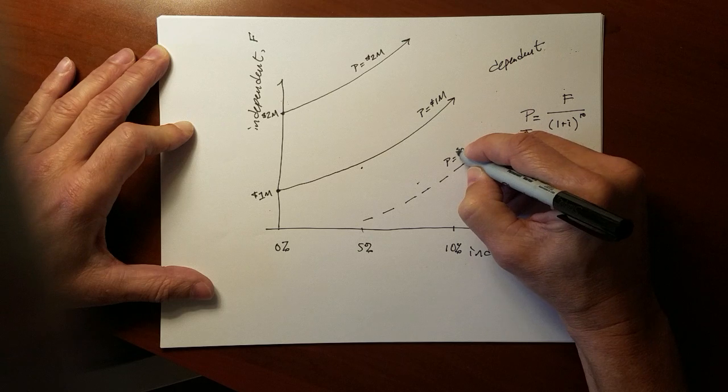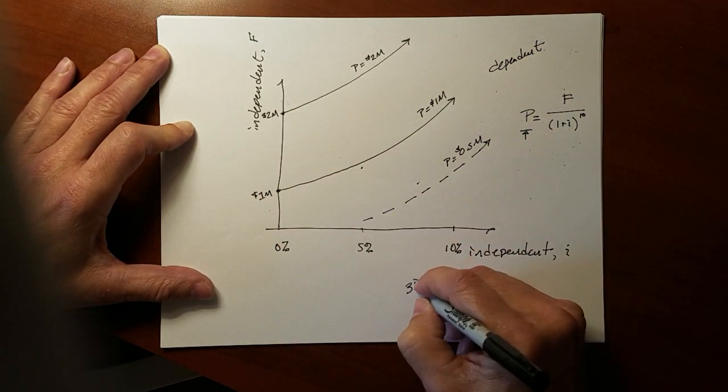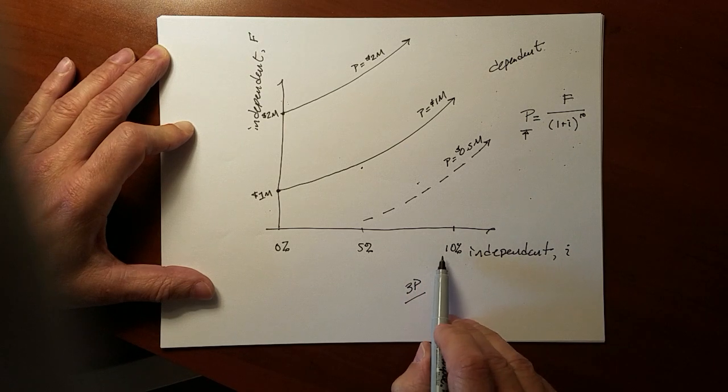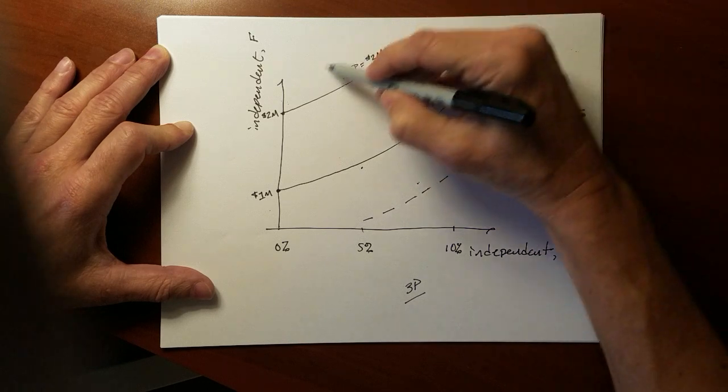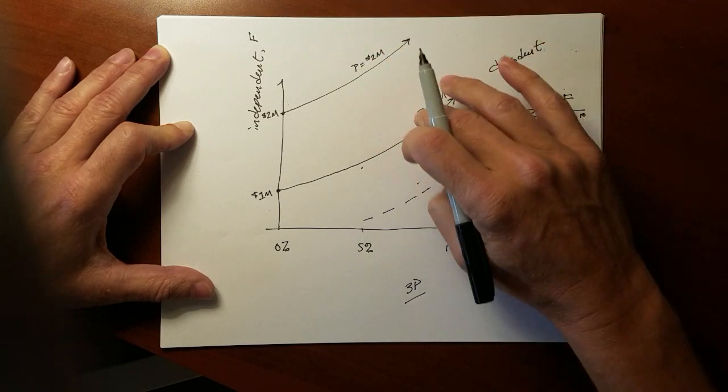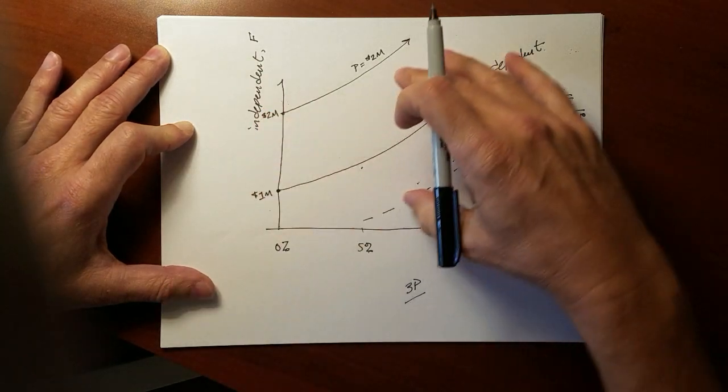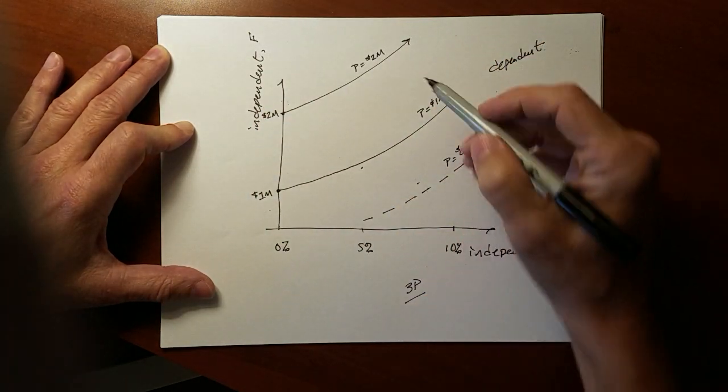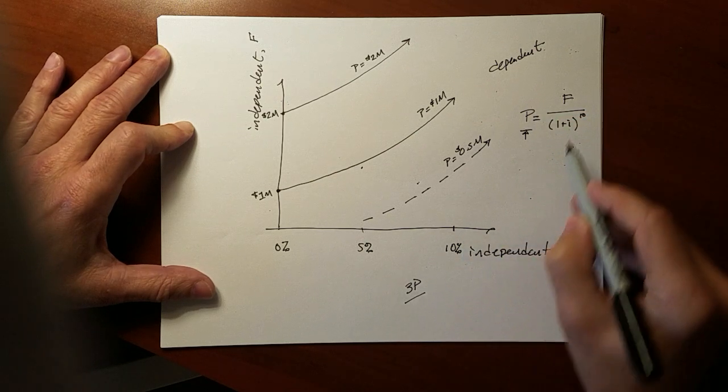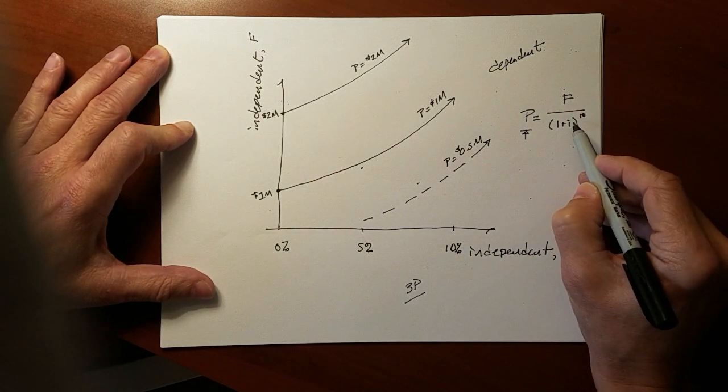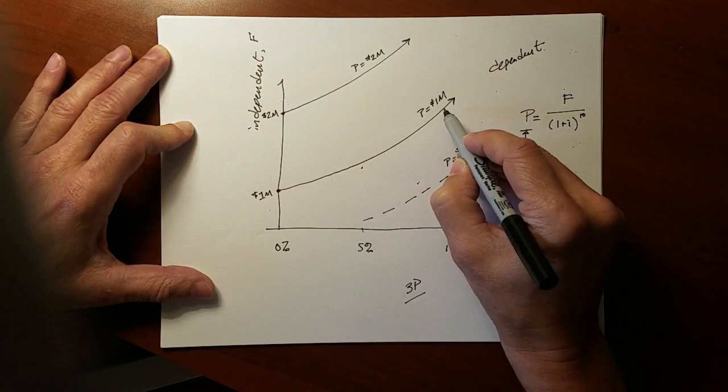Now you can see in this three-dimensional plot how we have two independent variables and the third variable, the dependent variable, is plotted as if it were a topographic map. Longitude, latitude, elevation. In this case, elevation is P. The longitude and latitude are the two independent variables and these isoquants show all of the combinations of solutions that result in P equals 1 million.